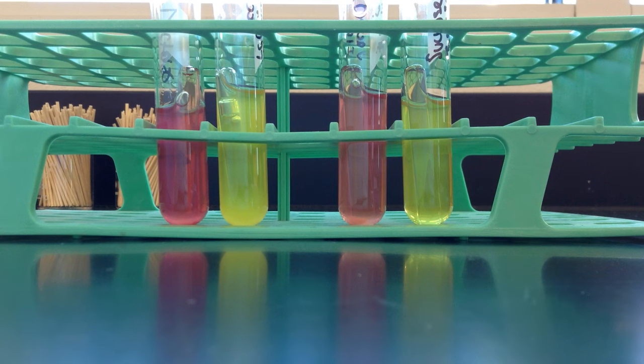One nice thing to do with these is to use them in conjunction with a TSI tube, in particular a TSI slant, because TSI has multiple sugars in there, so this can help narrow down or give us additional supporting information as to which sugars are fermented. And that is the carbohydrate fermentation with Durham tube.